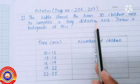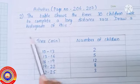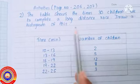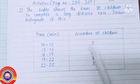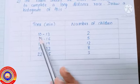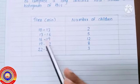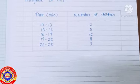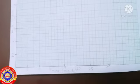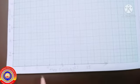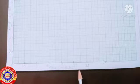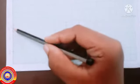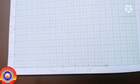Let's do an activity question in your textbook page 206. The table shows the times 30 children took to complete a long distance race. Draw the histogram of this. Here the classes are marked on the horizontal line (the time in minutes) and the frequency on the vertical line (the number of children).